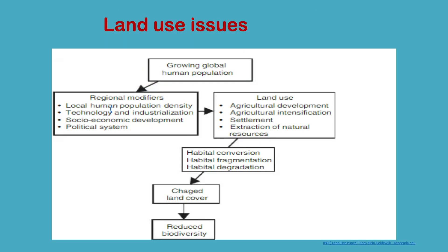Growing global population of humans reduces biodiversity primarily through land use that converts, fragments, and degrades land cover. Human population growth directly affects land use by demanding food, living space, and natural resources. The specific effects on regional land use are modified by local human density, local economy, local technology, industrialization, and local political system.